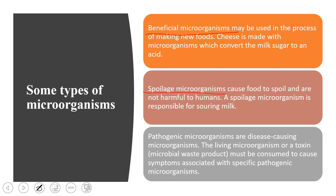Next are the spoilage microorganisms. These microorganisms are responsible for the spoilage of food — for example, spoilage of meat, milk, cheese, and vegetables. Milk can be spoiled by bacteria like Bacillus and Clostridium, while vegetables can be spoiled by fungi like Fusarium and Mucor.